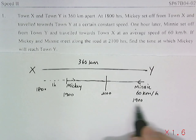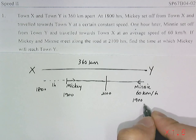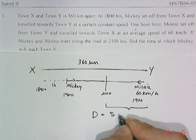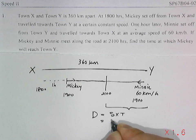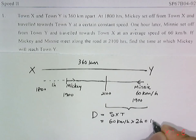From here, we can find out that for two hours, Minnie traveled a distance of speed times time, 120 km.